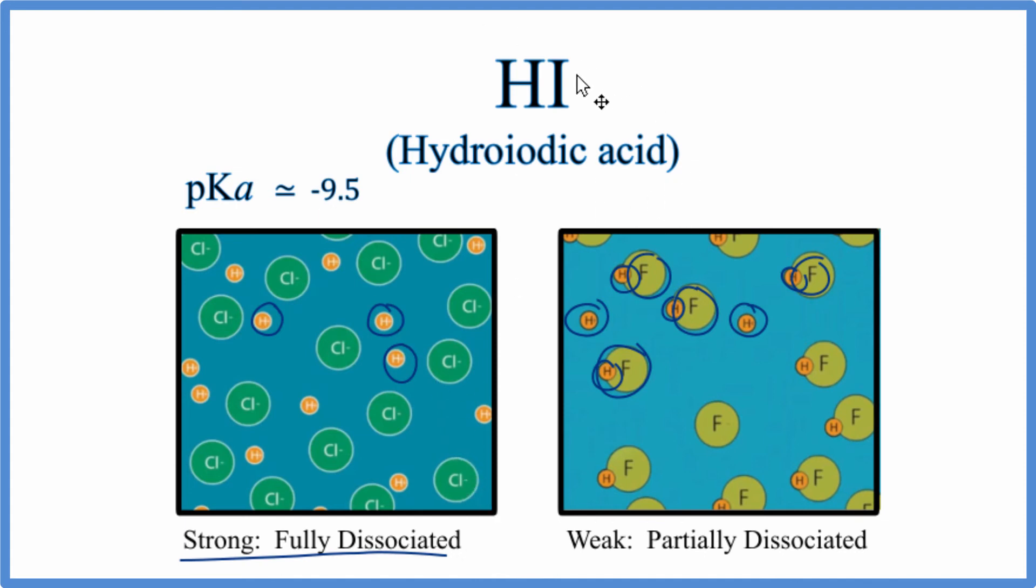So in the case of HI, negative 9.5 is quite a bit less than zero. This is going to be a strong acid. This is Dr. B discussing the strength of HI, hydroiodic acid. It fully dissociates, so it's a strong acid. You could also call it a strong electrolyte.